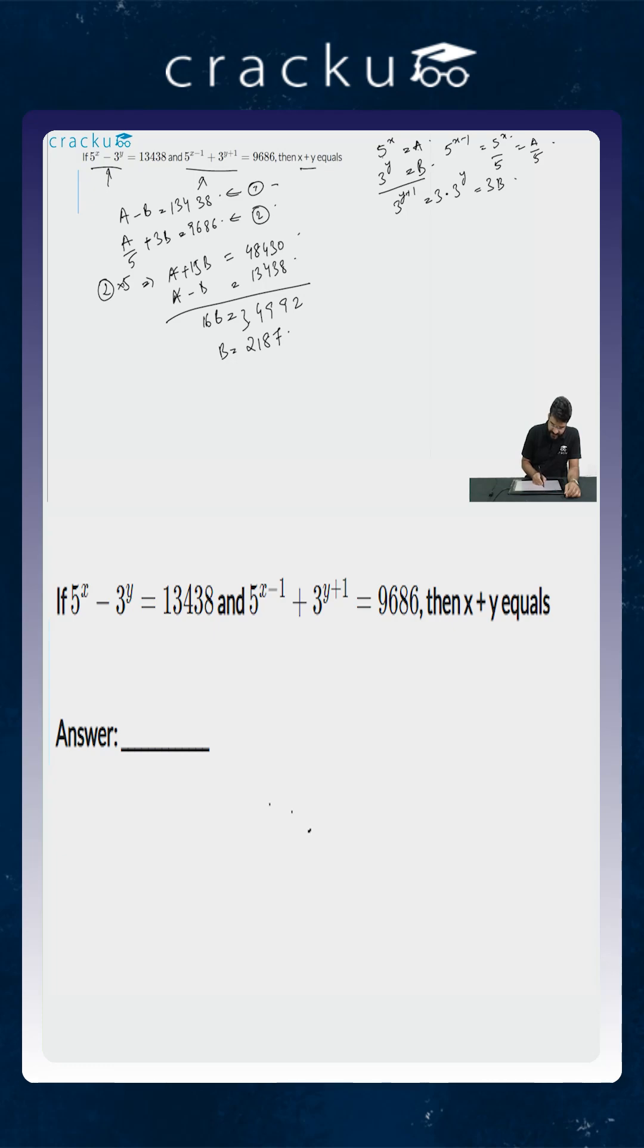Now we can easily use the first equation and calculate the value of a which will equal 2187 plus 13438. This if you simplify this will be 15625.